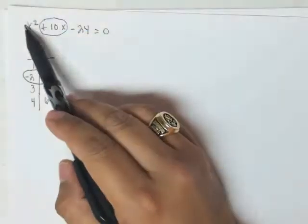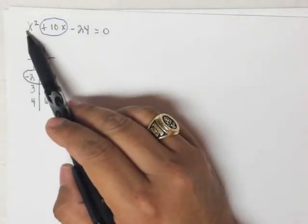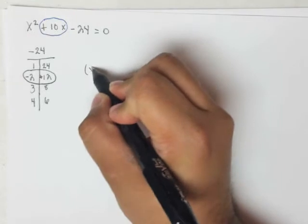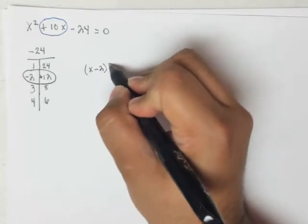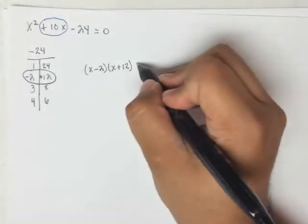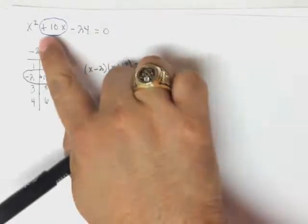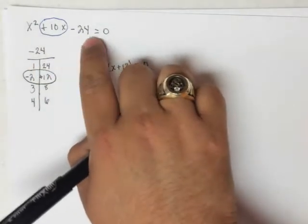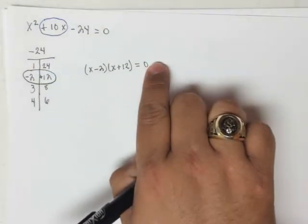So, what I can do, since the coefficient of this x squared term is 1, is simply write it out as x minus 2 and x plus 12. And we're going to set it equal to 0, because these are the factors. These right here are the factors of this up here. And that was equal to 0, therefore this must be equal to 0.